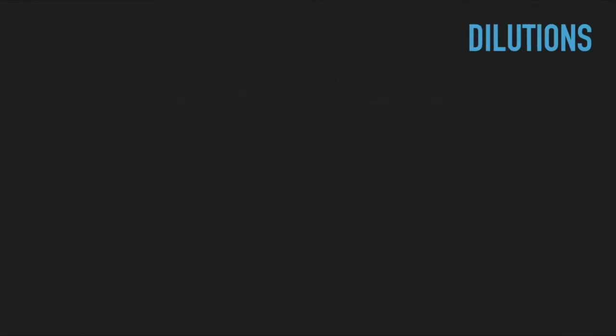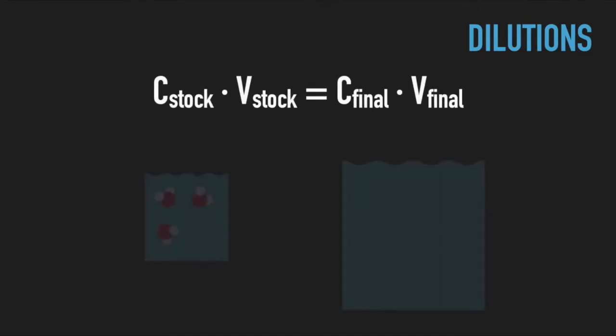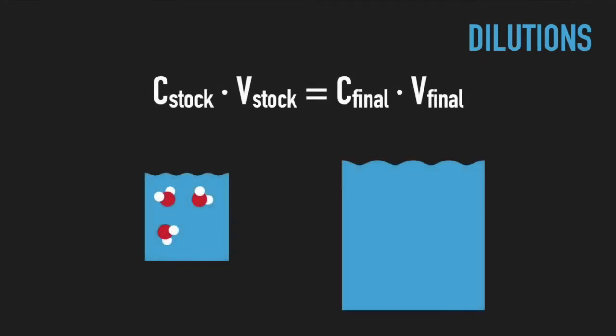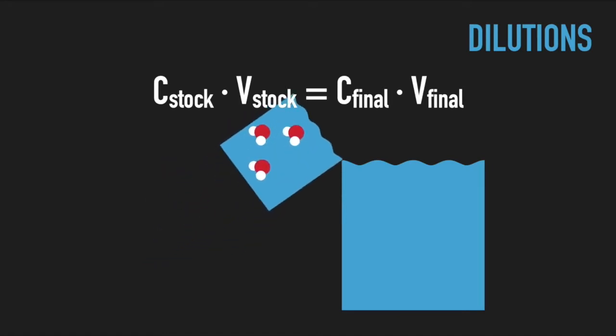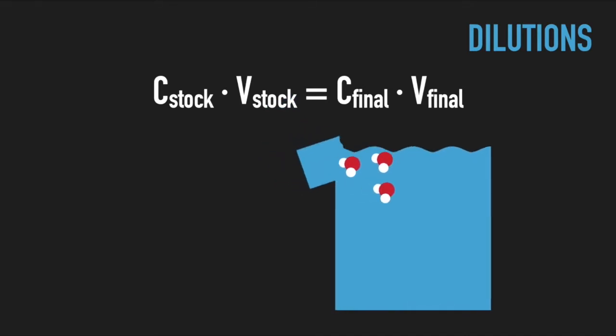You are probably familiar with this proportion. It is essentially the mathematical description of the law of mass conservation, saying that the number of molecules in the smaller volume of the concentrated stock is exactly the same as in the final volume of the diluted buffer. This gives you the formula for calculating the volume of the stock to add in order to reach the required, final concentration.